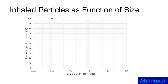Next, the orange particles are 300 nanometers, or 0.3 micrometer, in diameter. Again, nearly all of these particles — about 99% — are inhaled, and we can plot this on the figure. Finally, the green particles are 10 micrometers in diameter. A little more than 77% of these particles are inhaled, and we show this data point on the figure.